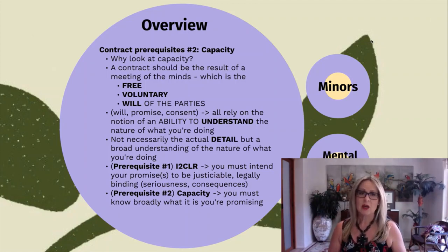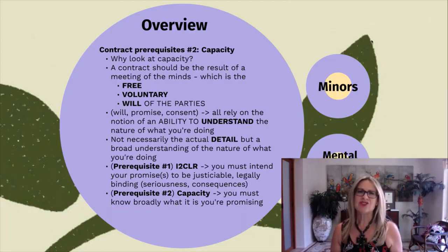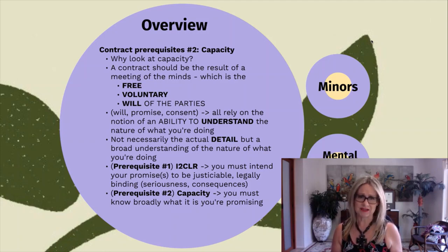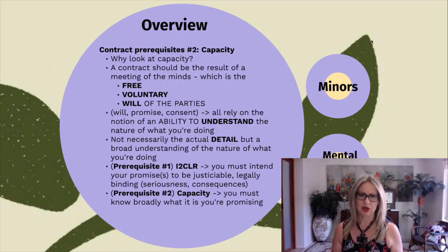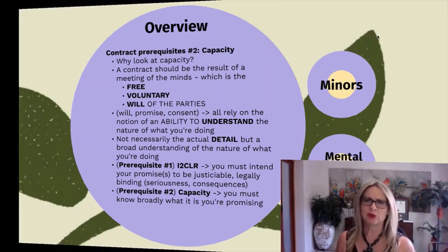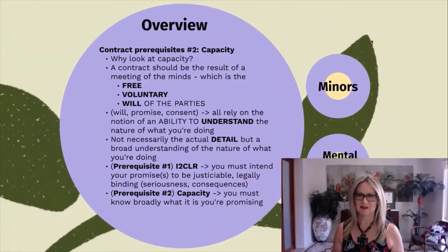In amongst that notion of a contract being the free, voluntary, or independent will of the parties, obviously firstly you have to intend that the contract is going to be legally binding — that's what we did last week. But implicit in all of that notion is also that you need to understand what it is that you're about to do. You need to understand the general nature of what it is that you are contracting to do, and that is where the prerequisite of capacity to contract kicks in. It's all about ensuring that the parties are equipped with a sufficient knowledge or understanding of the general purport of what it is they're going to do.